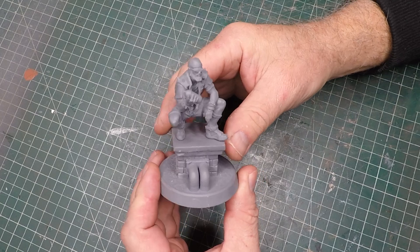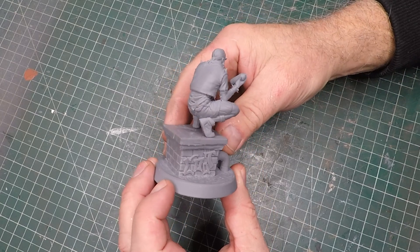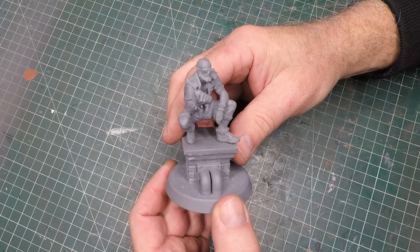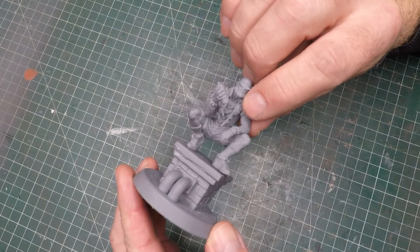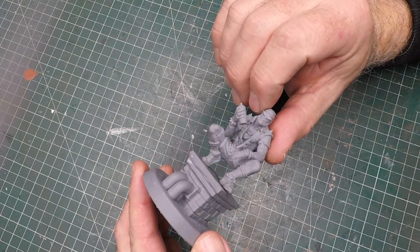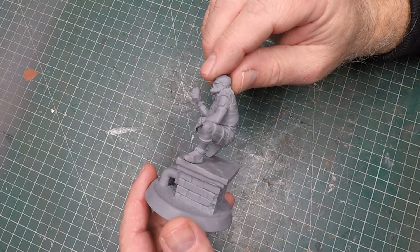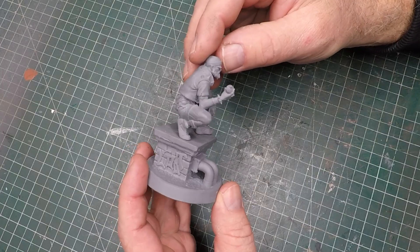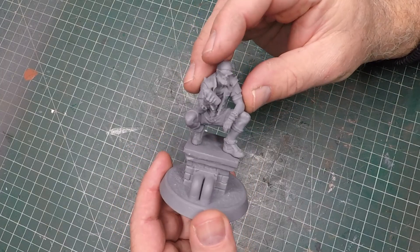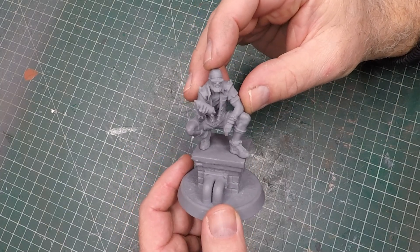And what was even more impressive was the final print. I could not find a single layer line in there and I even used my magnifying glasses to see if I could spot anything in his knee, in his shoulders, on top of his hat. Nothing. No layer lines. Very impressed.